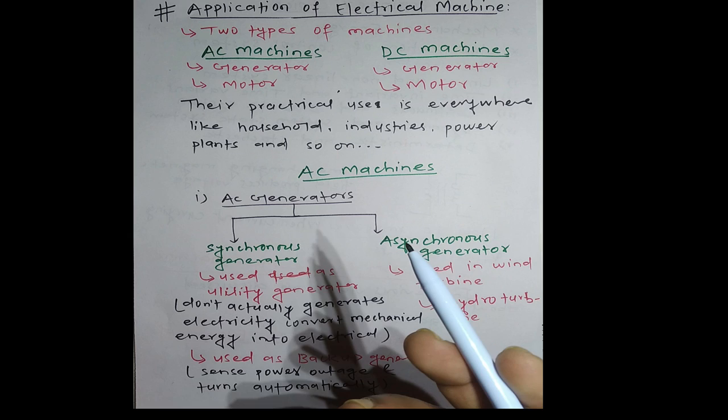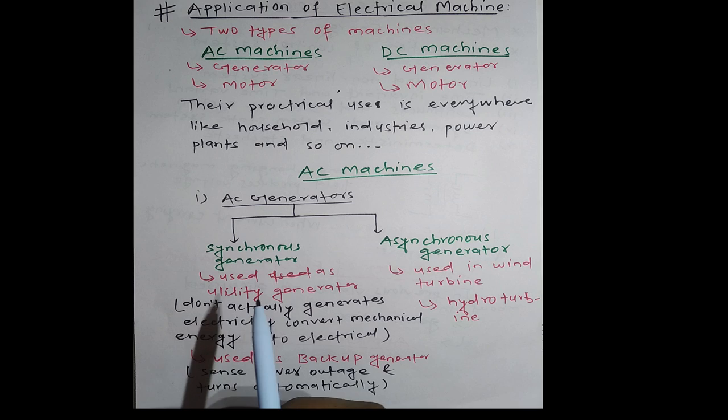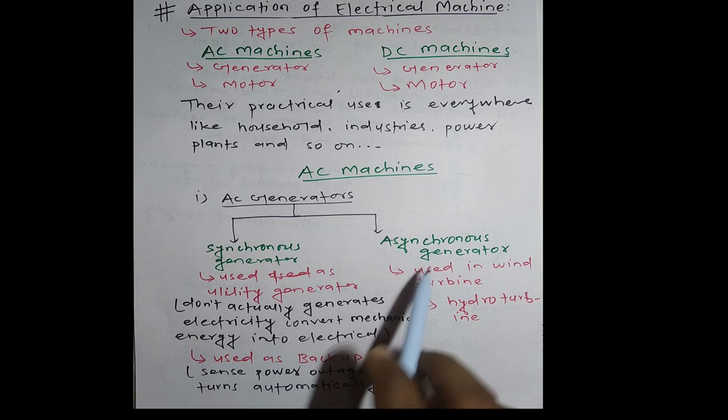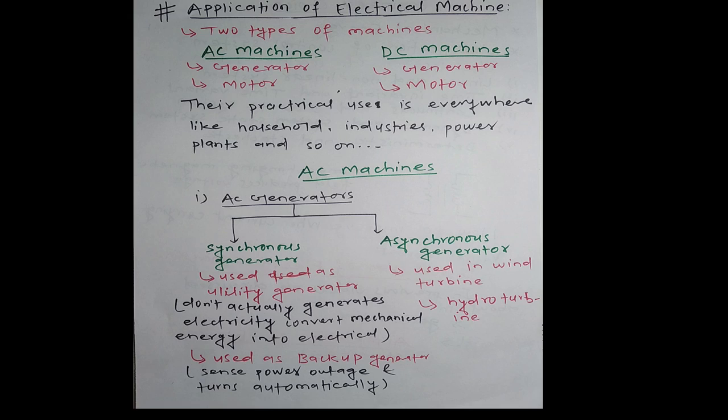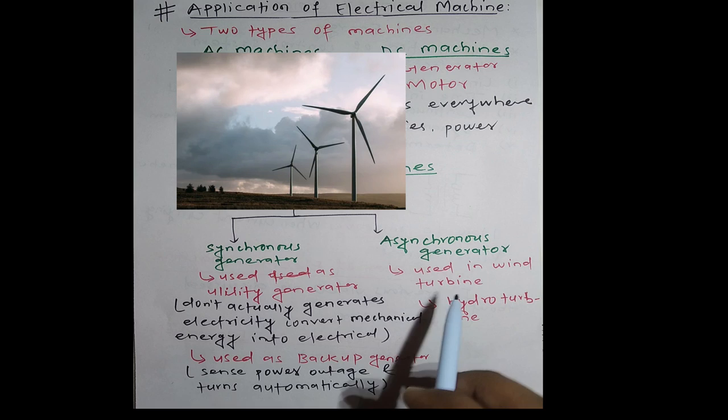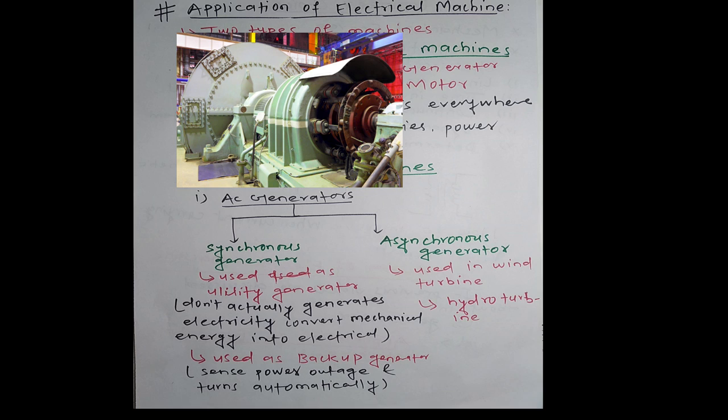If we give diesel, petrol, or any gases to the generator, it creates electricity. It doesn't have its own electricity. Synchronous generators are also used as backup generators, sensing power outages and turning on automatically. If there is a lack of power, it turns on automatically. Synchronous generators are used in wind turbines, hydropower, and hydroturbines.